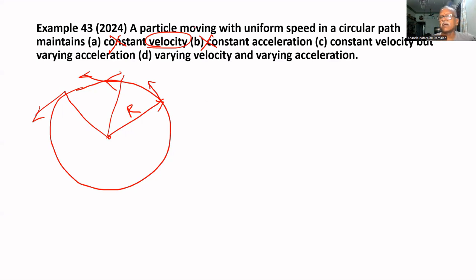That's why velocity is not constant. If velocity is not constant, acceleration is not constant. So constant velocity but varying acceleration - that is also not possible. Varying velocity and varying acceleration. D is the correct answer.